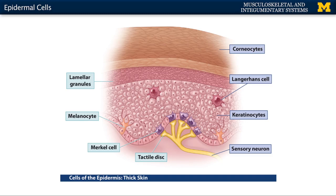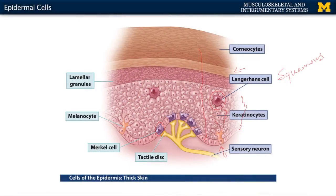To review: keratinocytes are found throughout all layers of the epidermis — they are larger in the deeper layers and get flatter as you move more superficially, which is where the squamous description comes in. The other three cell types are mostly in the deeper layers: melanocytes with their extensions between cells, Merkel cells in the deepest layer, and Langerhans cells typically in the deepest or second deepest layer. Remember these four main cells as we continue into the next module discussing the different layers of the epidermis.